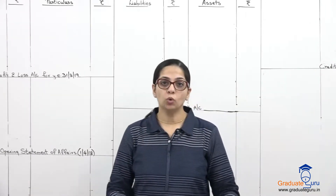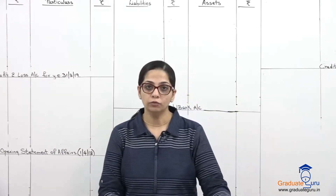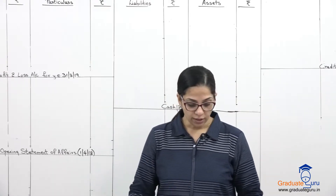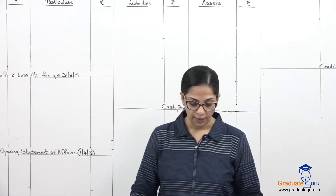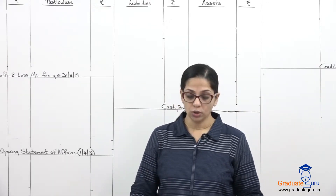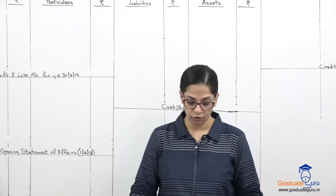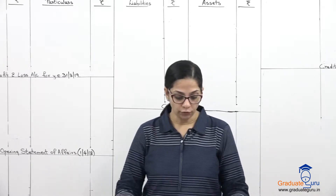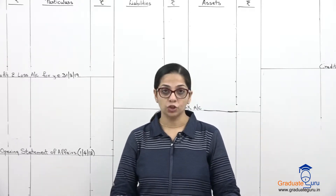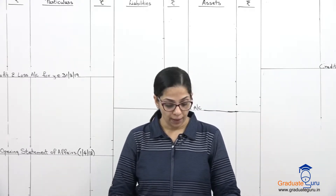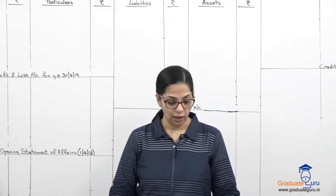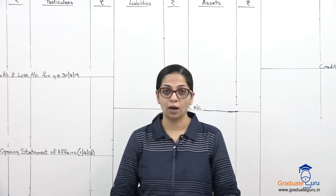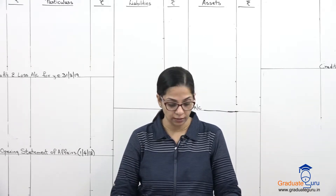Let's move to question number 14. Mr. Raju maintains books on a single entry system. From the following information, prepare his final accounts for the year ended 31st March 2019.